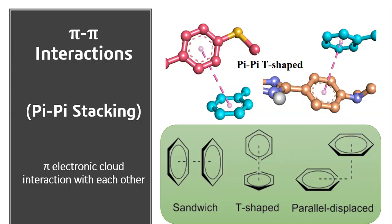Pi-pi interactions: the first type is pi-pi stacking, where pi electronic clouds interact with each other. This is most common in aromatic rings. There are three different types of pi-pi stacking: sandwich, T-shaped, and parallel displaced. In sandwich stacking, both benzene rings are parallel and overlapping. In T-shape, the edge of one benzene ring interacts with the face of the other. In parallel displaced, both rings are offset from each other.